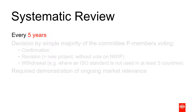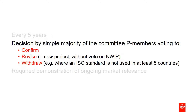Finally, there is a tool that ensures that all international standards remain relevant: the systematic review. This happens automatically five years after publication, and the review period lasts for 20 weeks. The result is decided by a simple majority of the P members. They can choose whether they think the standard should be confirmed, meaning it will remain available and unchanged for another five years. The second option is to revise the standard, which can be initiated without the need for a new work item proposal. Or finally, if the standard is not used in five countries or more, it is not deemed to be globally relevant, so they can vote for withdrawal.